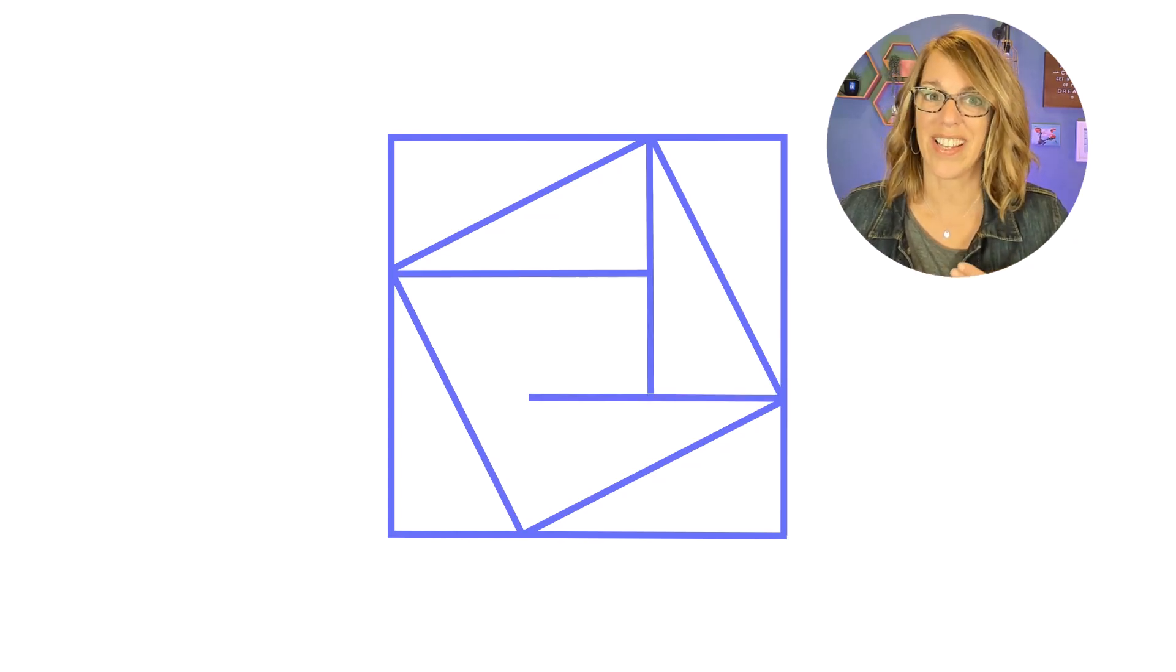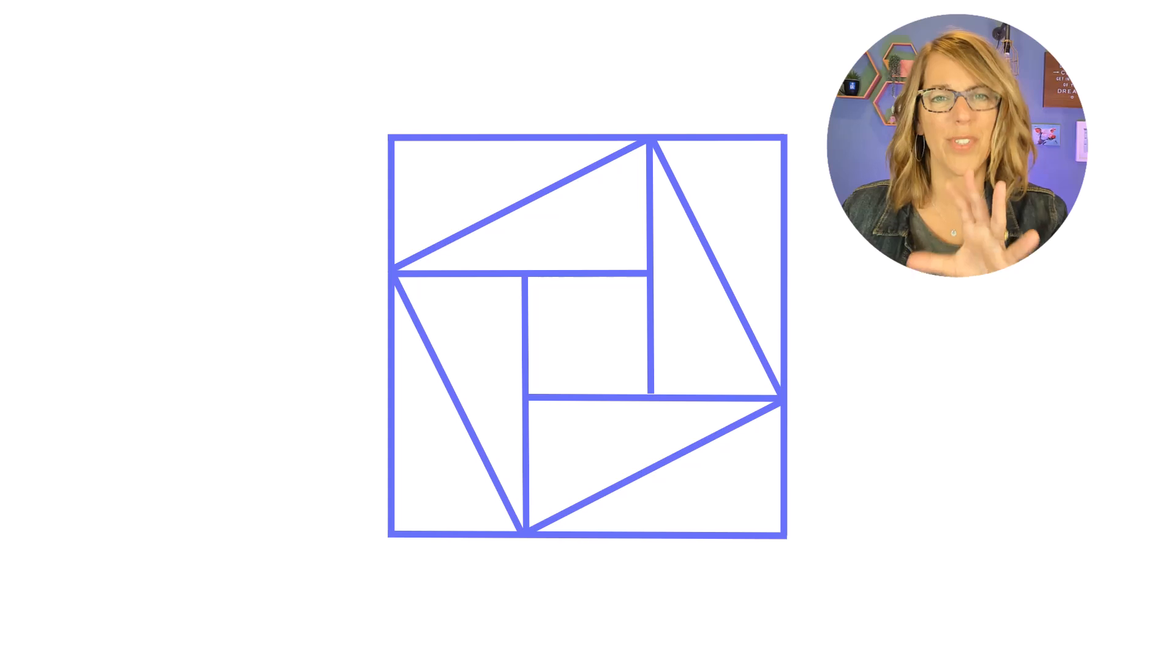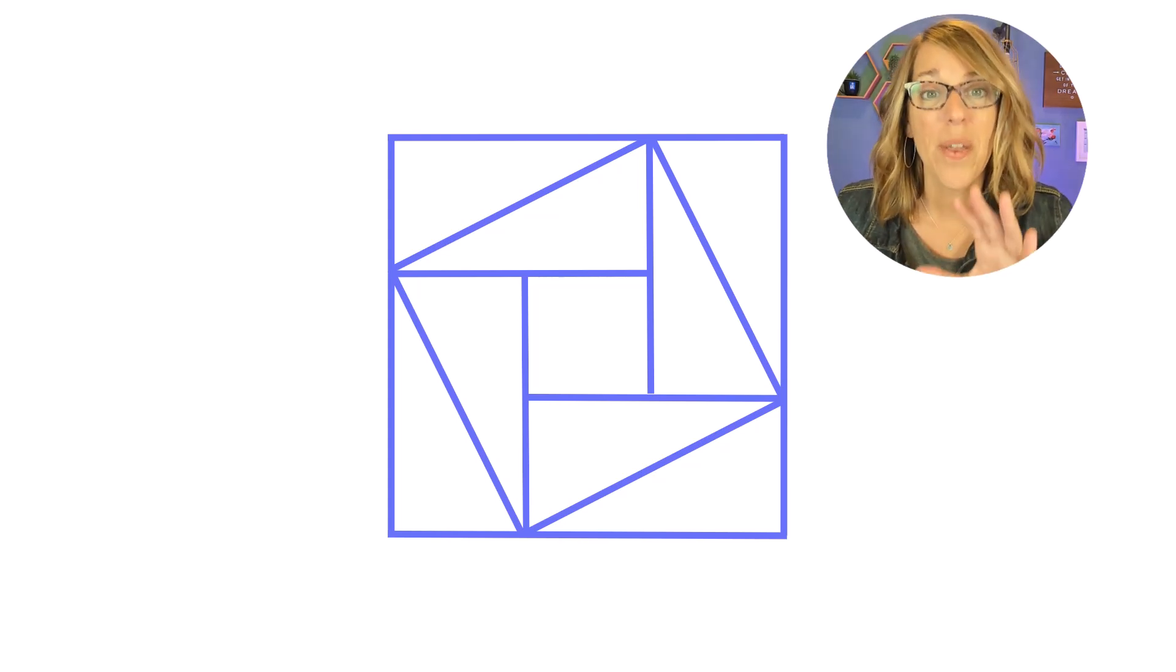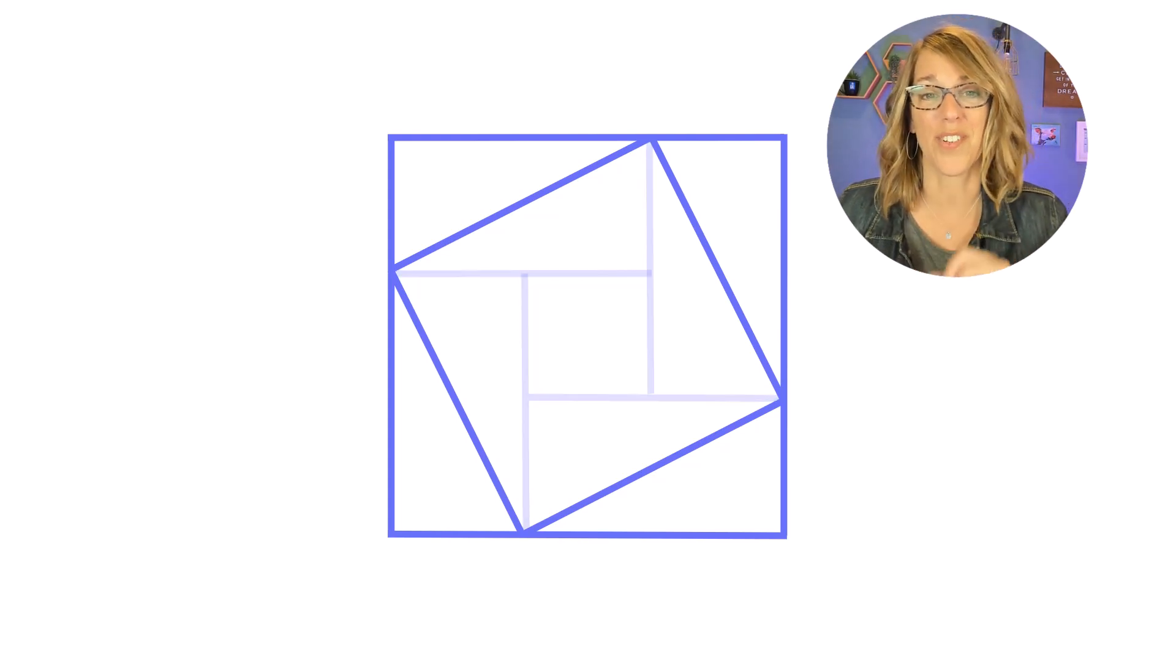Now I'm going to draw some additional lines, and these additional lines give us some super interesting relationships, but they're not important to our visual proof of the Pythagorean Theorem. Instead,